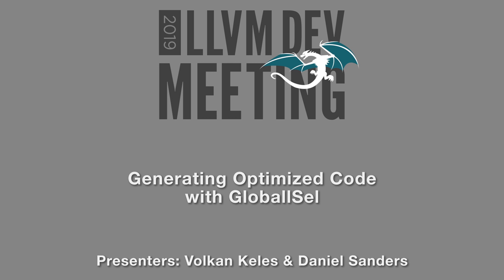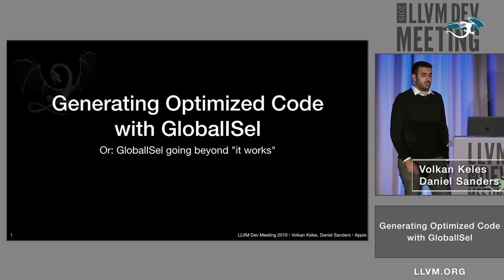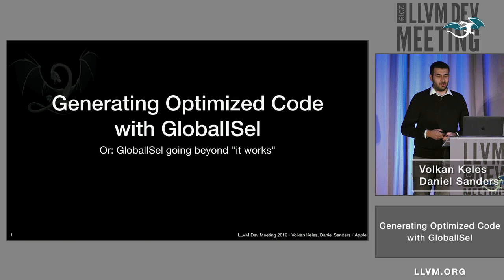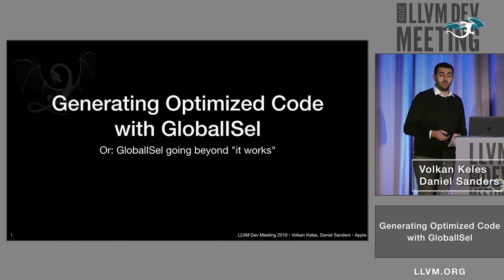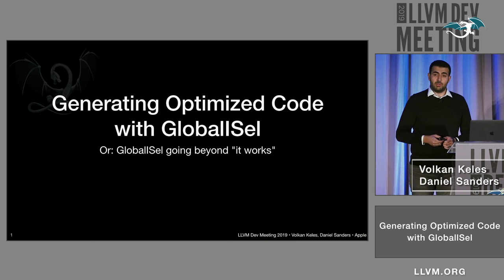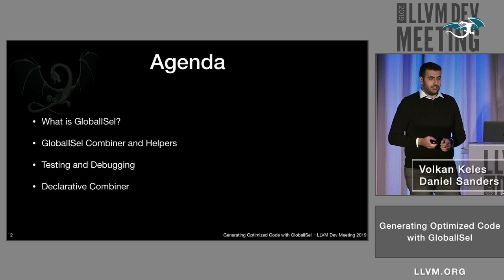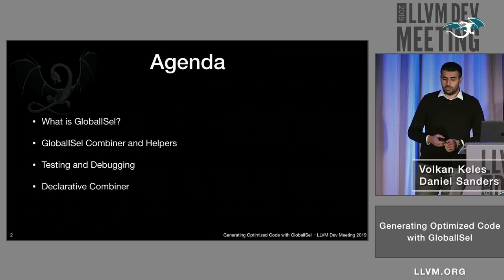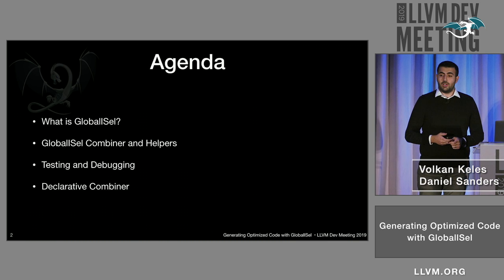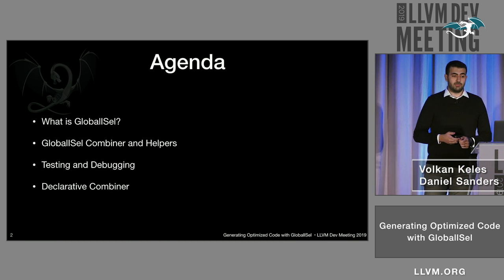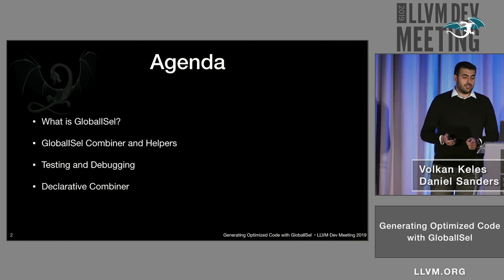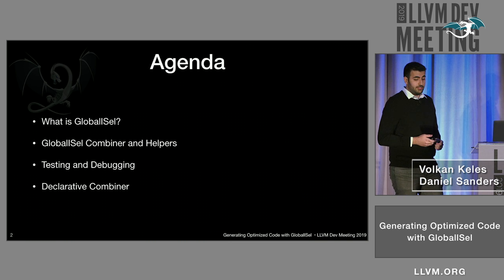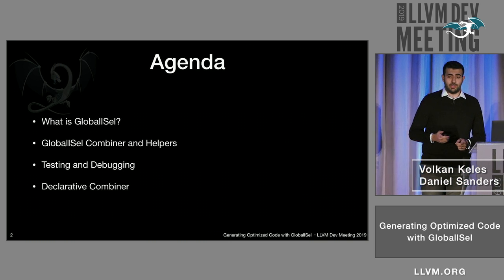Good morning, everyone. I'm Volkan, and this is Daniel. Today we are going to talk about our work on Apple GPU Compiler. Specifically, we are going to talk about generating optimized code with Global ISel, or Global ISel going beyond networks. Here's the agenda: we'll start with what Global ISel is, its goals, and how it works. Then we'll look at some components, particularly the Global ISel combiner. Then we'll talk about how to test optimizations and debug issues. And finally, we'll talk about the declarative combiner — what it is and why we need it.